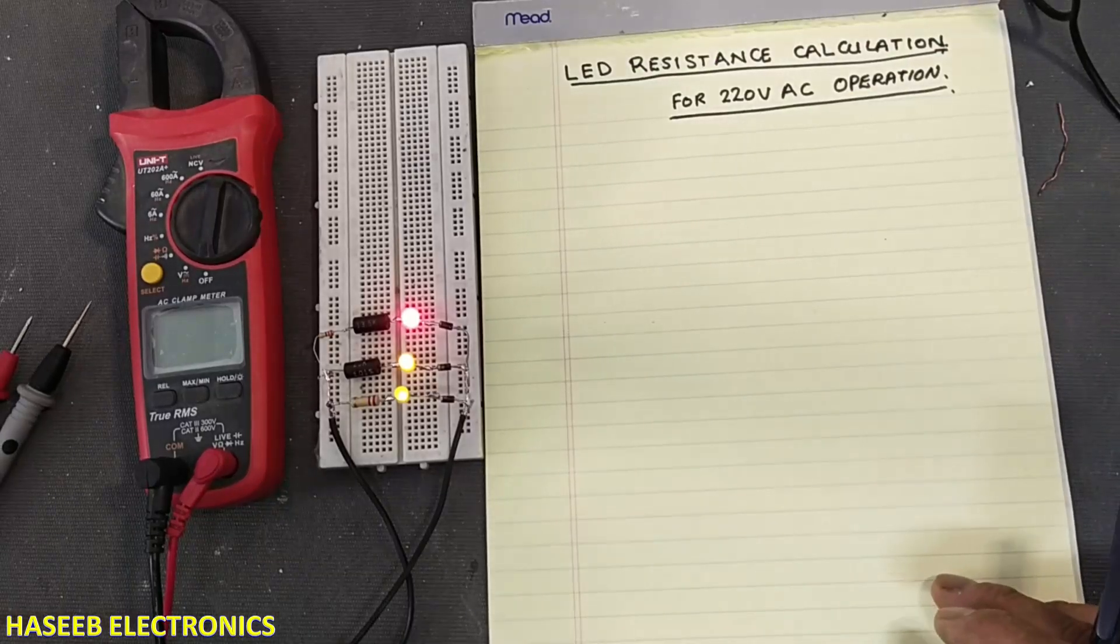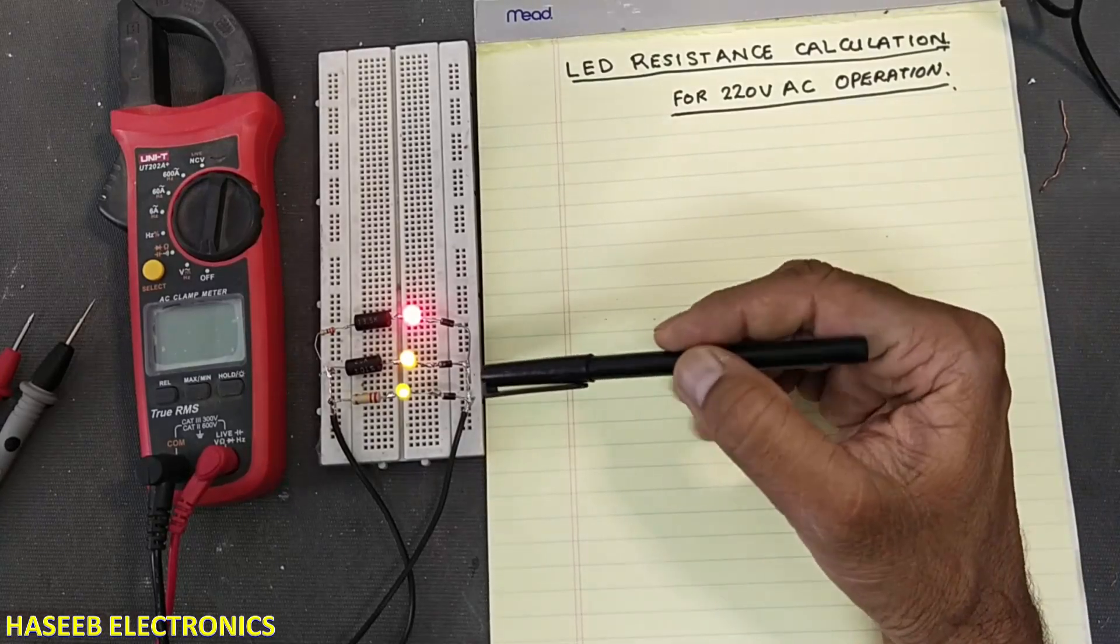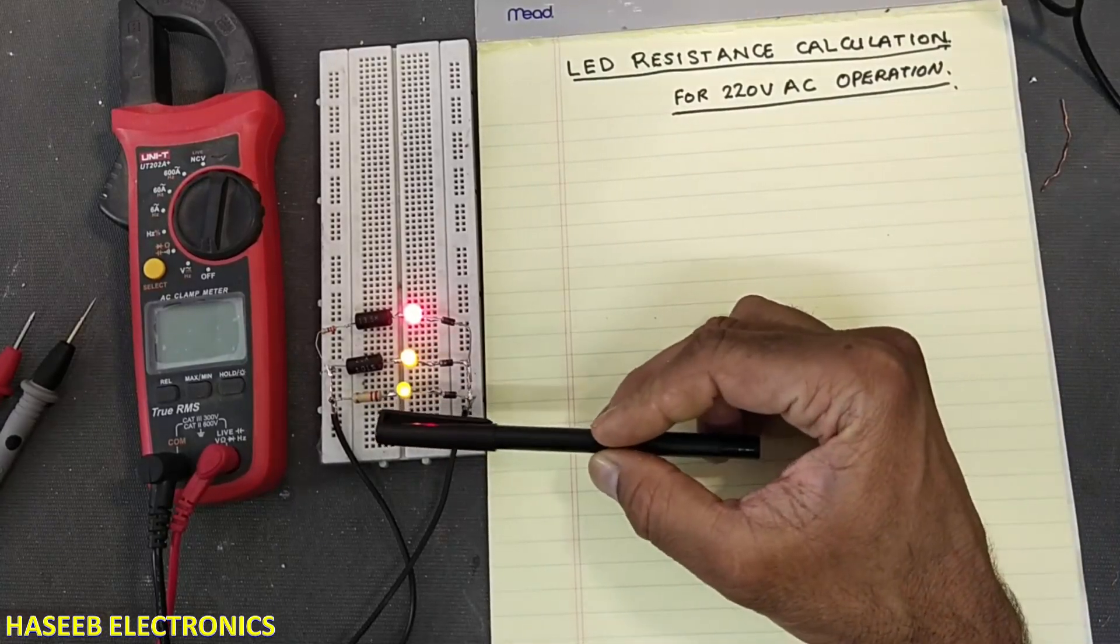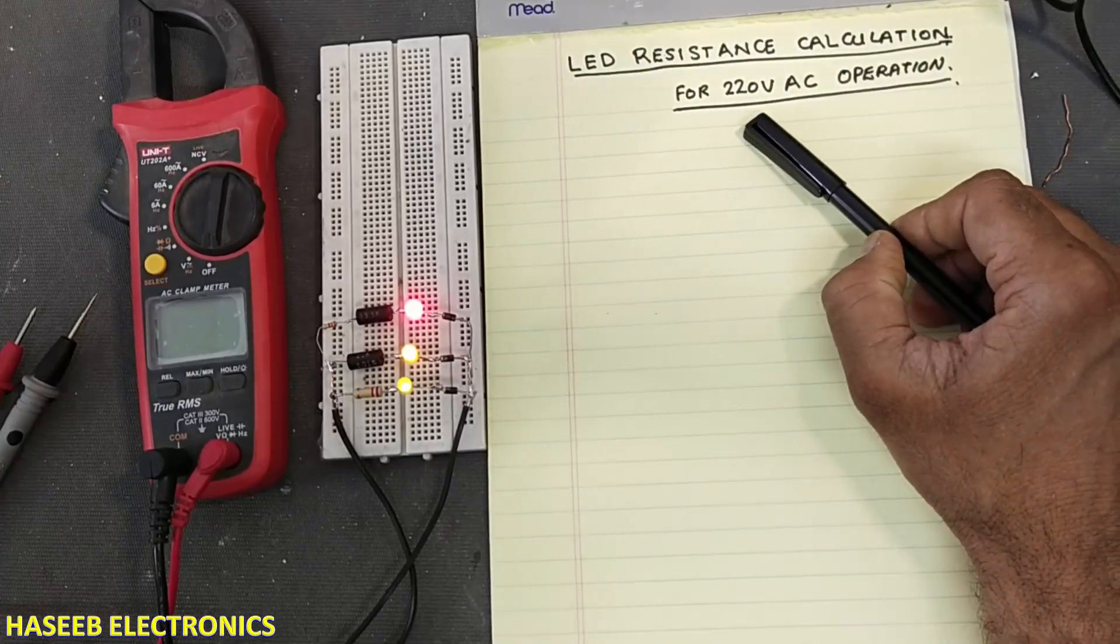Friends, welcome back to my channel. In this session we will see how we can calculate a perfect resistor for LED when we want to use it for 220 volt operation.